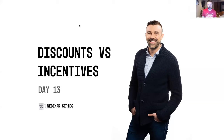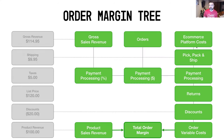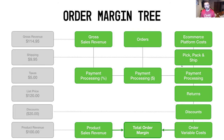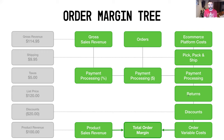So day 13: discounts and incentives. Today we're going to cover the last step of the order margin tree. Over the last couple of days we talked about returns, payment processing fees, pick pack and ship, and your e-commerce platform. Today discounts round out that last step, and tomorrow we'll package the whole order margin tree together.